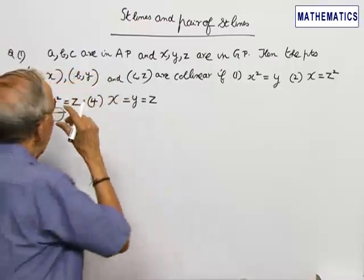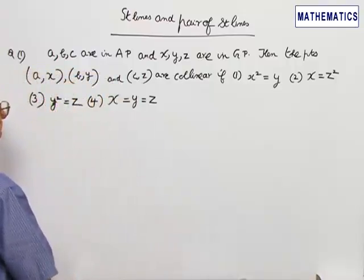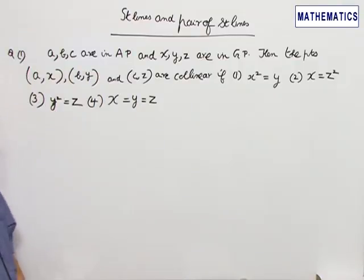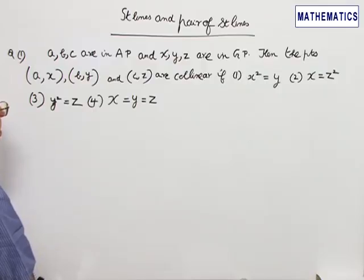The first problem is: A, B, C are in AP and X, Y, Z are in GP. Then the points (A, X), (B, Y), and (C, Z) are collinear if—four choices are given of which one is correct.